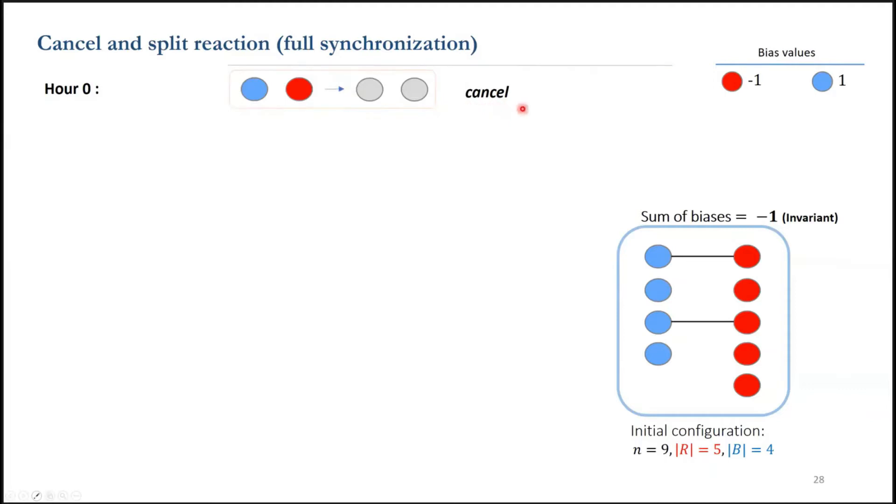We saw this reaction in the very first protocols too. Another important reaction happens when an opinionated agent meets a neutral one and distributes its opinion. We call that split.